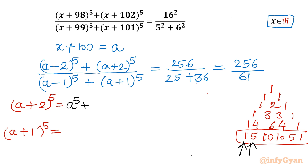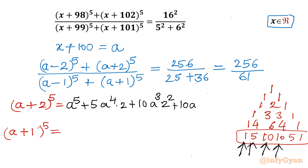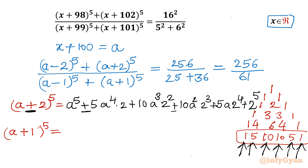Using these coefficients, (a+2)^5 = a^5 + 5·a^4·2 + 10·a³·2² + 10·a²·2³ + 5·a·2^4 + 2^5. For (a−2)^5, the alternate terms get a negative sign, so the 2nd, 4th, and last terms become negative.